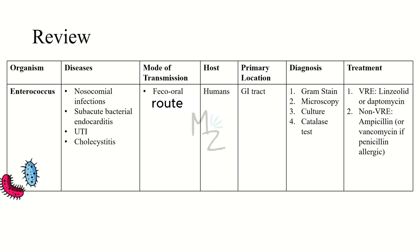In review: Enterococcus causes nosocomial infections, subacute bacterial endocarditis, UTIs like cystitis and pyelonephritis, and biliary infections like cholecystitis. It is transmitted via the fecal-oral route; humans are the hosts and the primary location is the GI tract, though it can also be found in the genitourinary tract. Diagnosis is based on gram staining, microscopy, culture, and catalase test. Vancomycin resistant enterococcus is treated with linezolid or daptomycin, and non-vancomycin resistant enterococcus is treated with ampicillin or vancomycin.